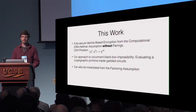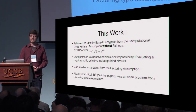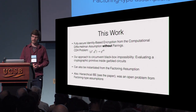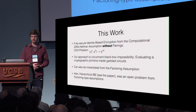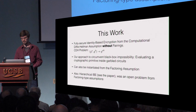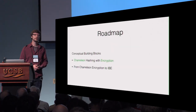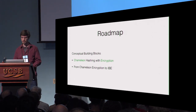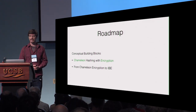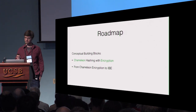We can also instantiate our result from the factoring assumption. In the paper, we also provide a construction of hierarchical IBE, which was an open problem even for factoring-type assumptions such as the quadratic residuosity problem. In the rest of the talk, I am first going to introduce a new notion of encryption we call chameleon hashing with encryption.